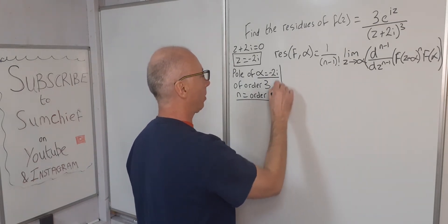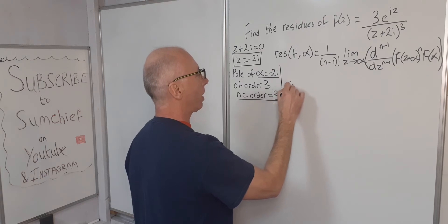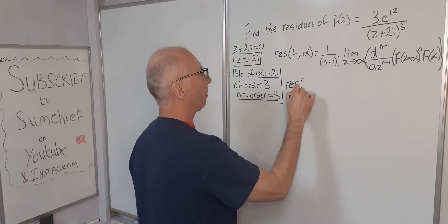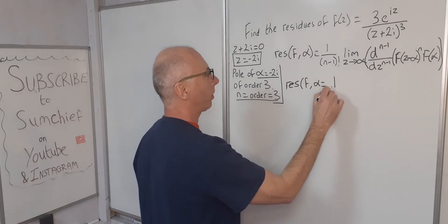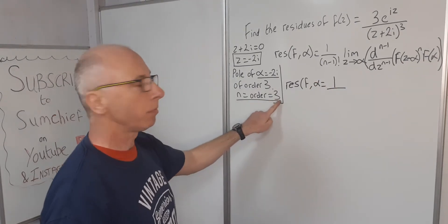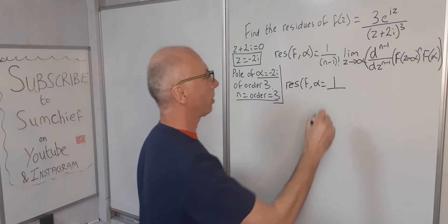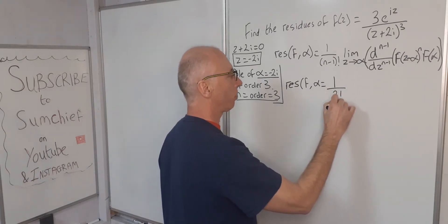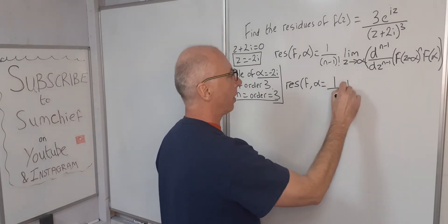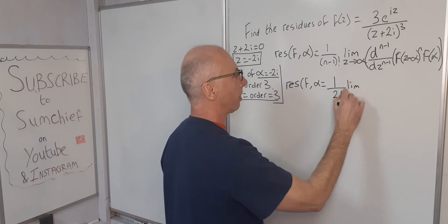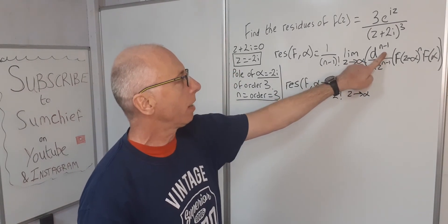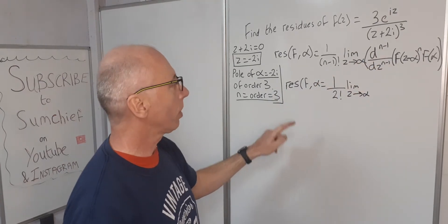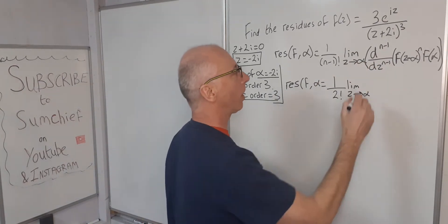So let's box this off. The residue of f at alpha equals 1 over (n-1), that's 2, so 2 factorial. The limit as z approaches alpha, (n-1) is 2. So we need to find the second derivative of our function.